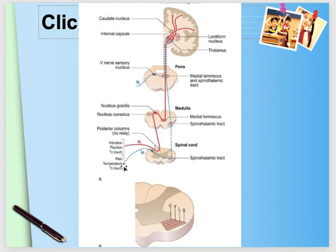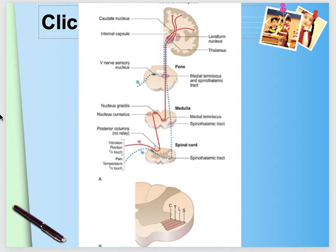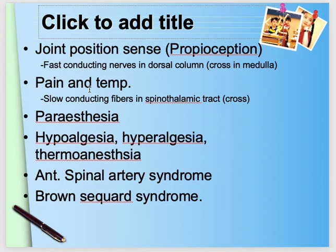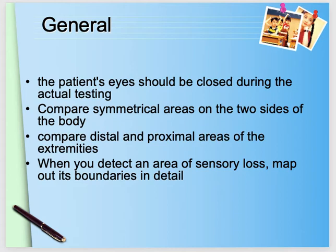When checking sensation we always examine joint position sense (proprioception), pain, and temperature. There can be hypoalgesia (decreased sensation) or hyperalgesia (increased pain sensation). Equipment needed: a pen, a cotton swab, and something hot or cold (though temperature testing is not usually performed in routine clinical practice). We can check vibration sense with a tuning fork, which is carried by the posterior columns.